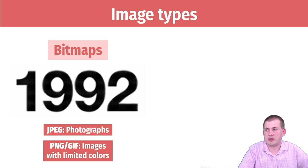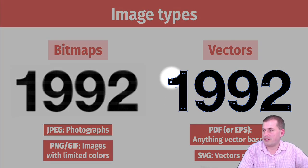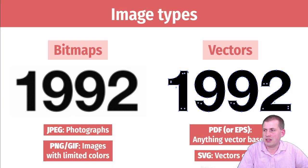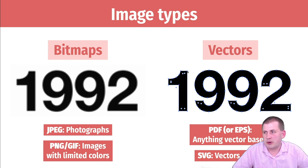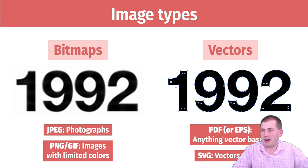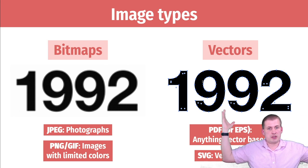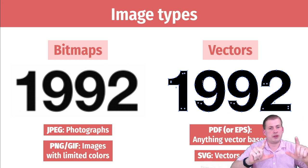Another way of working with images is as vectors — a more mathematical way of representing things. Rather than having pixels, you have dots with lines drawn between them. Those lines are like mathematical equations that define the angle and curvature of each line. Vectors are super important because they can be scaled up and down infinitely. You could zoom in on an image infinitely and never see any pixels. You could also blow it up to billboard size and it would look great, because it's just mathematical equations getting bigger and smaller.